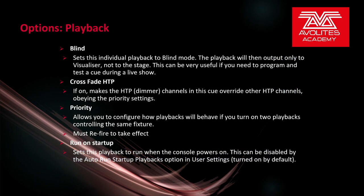Under the playbacks tab, we'll have Blind. This sets the individual playback to blind mode - the playback will only output to the visualizer and not to the stage. This is useful if you need to program and test a cue during a live show. Crossfade HTP, if on, makes the HTP channels dimmer in this cue override other HTP channels and obey their priority settings. So if you needed a playback that would bring down levels of other playbacks, you can set the priority to higher and use Crossfade HTP.